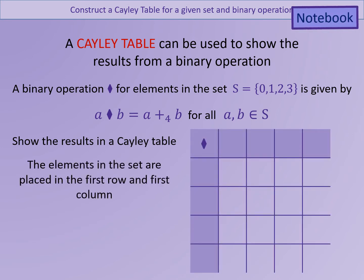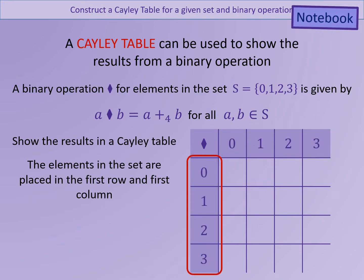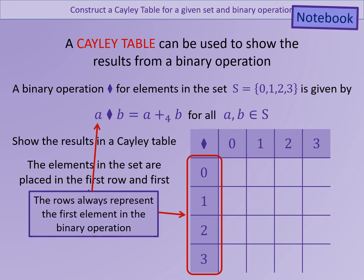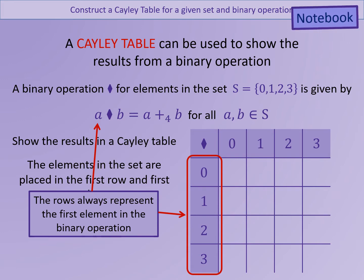The elements in the set are put in the first row and the first column. The elements shown in the first column always represent the first element. In this case, the numbers down the side represent a, and the numbers along the top represent b. Pause the slide and complete the outcomes for addition mod 4 for each of those four values.